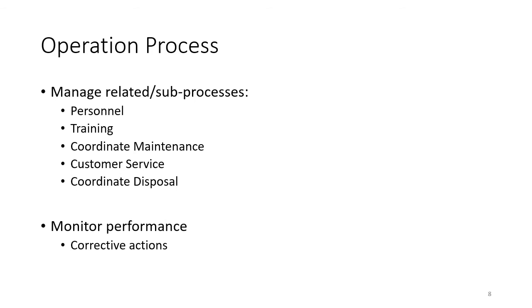Keep in mind the operations process is not just about using the system. The system has to be staffed, so personnel have to be brought on board and trained. There's no system that doesn't decay over time, so the system has to be maintained. There are issues to manage with regards to customer service and supply chain service, and any waste products or emissions need to be disposed of. A big part of the operations process is to monitor performance in terms of safety and efficiency, and then take corrective actions.